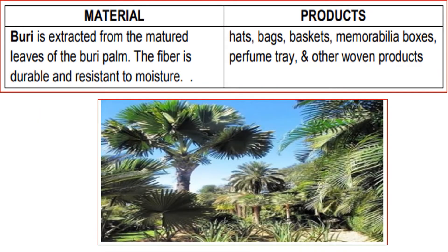Another material is buri. It is extracted from the matured leaves of the buri palm. The fiber is durable and resistant to moisture. It can be produced into hats, bags, baskets, memorabilia boxes, perfume trays, or other woven products.